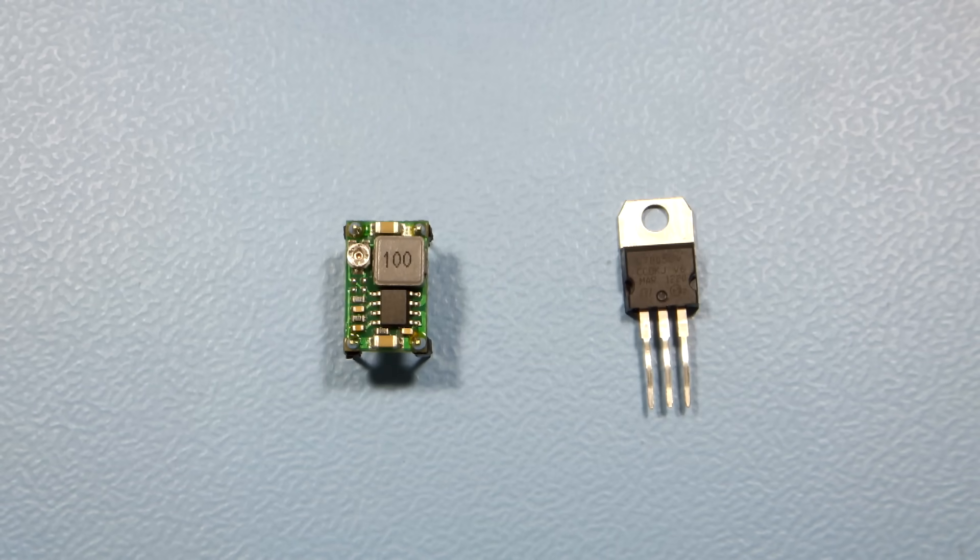But you can buy an LM7805 for about 30 cents, while the cheapest buck converter will cost you about $2.50.